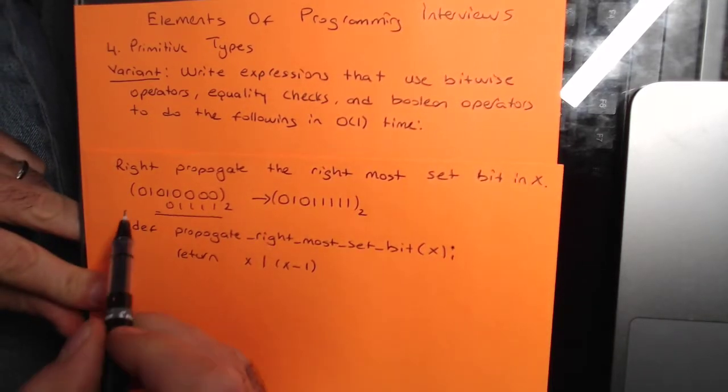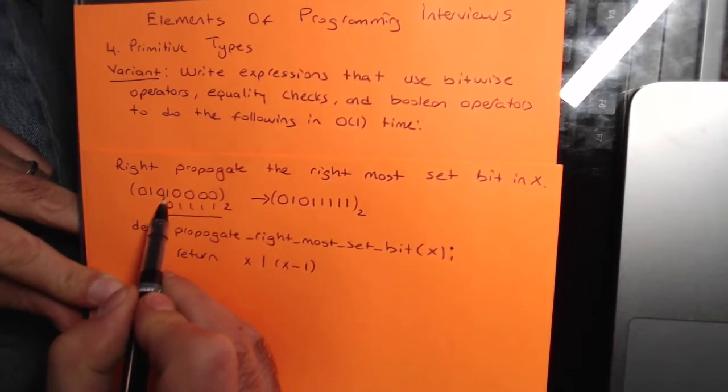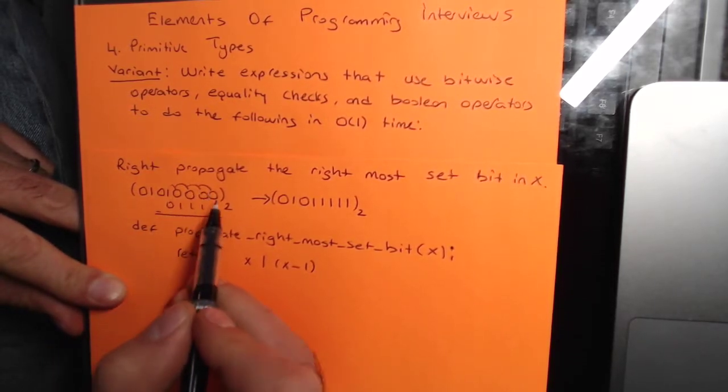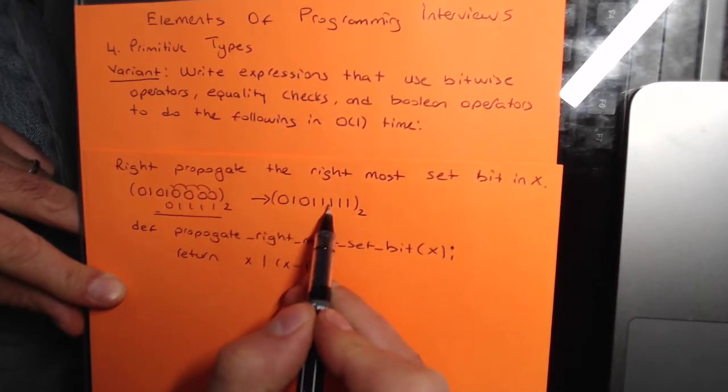The question is asking us to propagate the rightmost set bit. If you look at a number like this, the rightmost set bit is 1, and we need to propagate this to all these locations, so that number becomes 01011111.